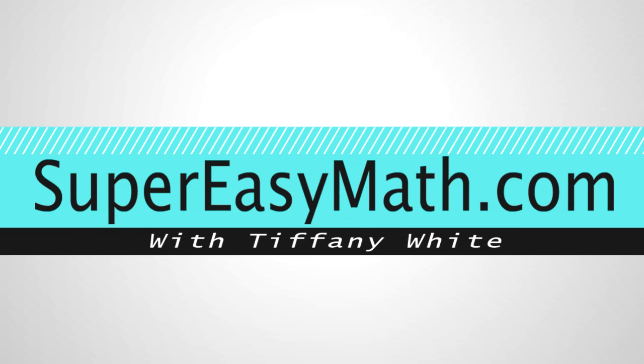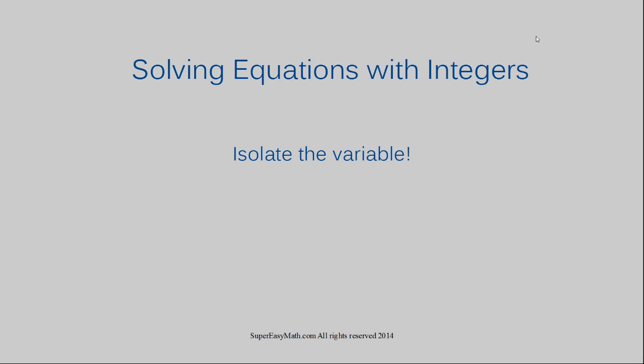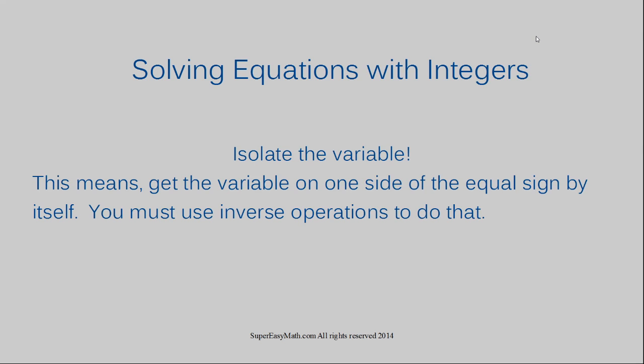Hey guys, it's Tiffany. Today I'm going to show you how to solve equations with integers. Isolate the variable — you are going to hear this so many times when you are learning how to solve equations with integers. Isolate the variable just means get the variable on one side of the equal sign by itself. You need to use inverse operations to do that. A variable is a letter or symbol that represents an unknown number or a select value. So in this case the variable is T, and when I say isolate the variable I mean get the T on one side of the equal sign by itself.